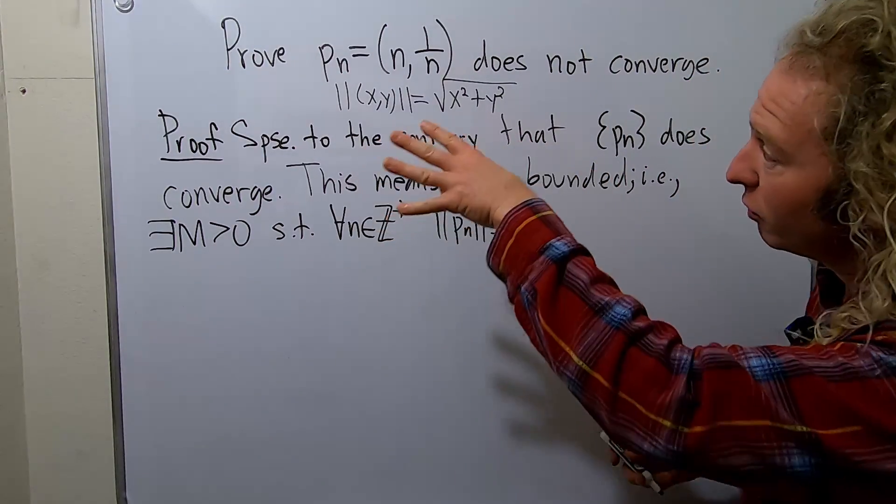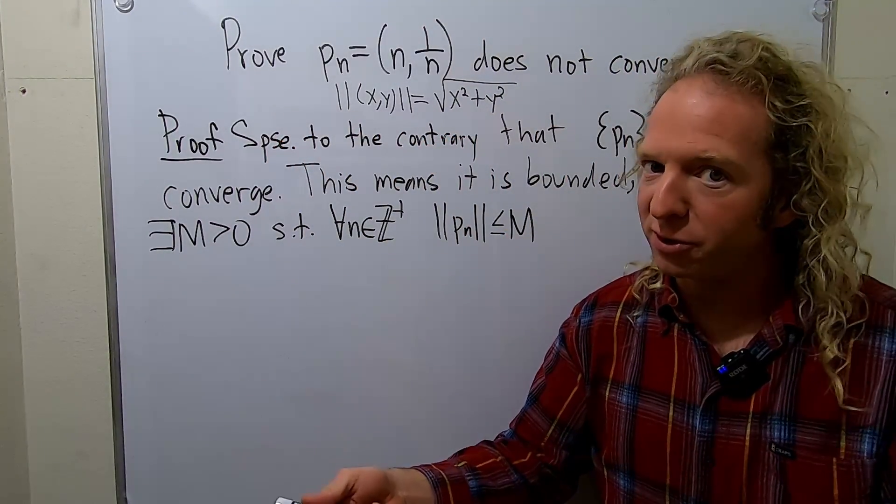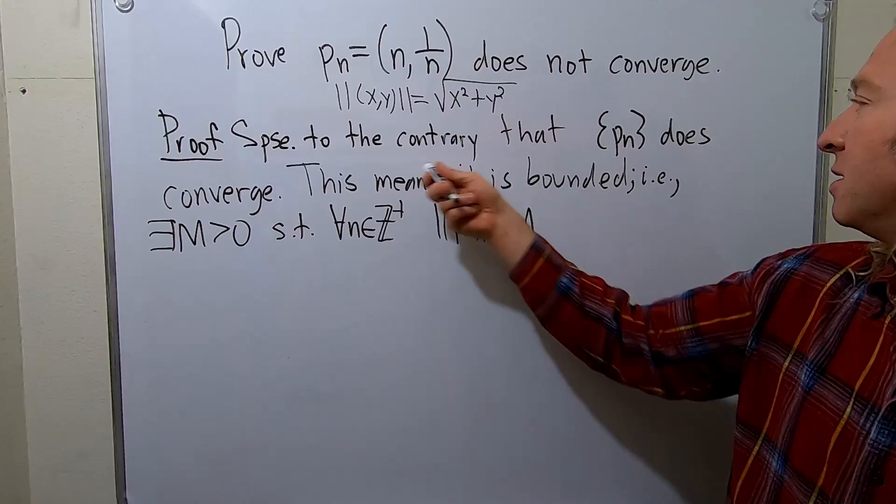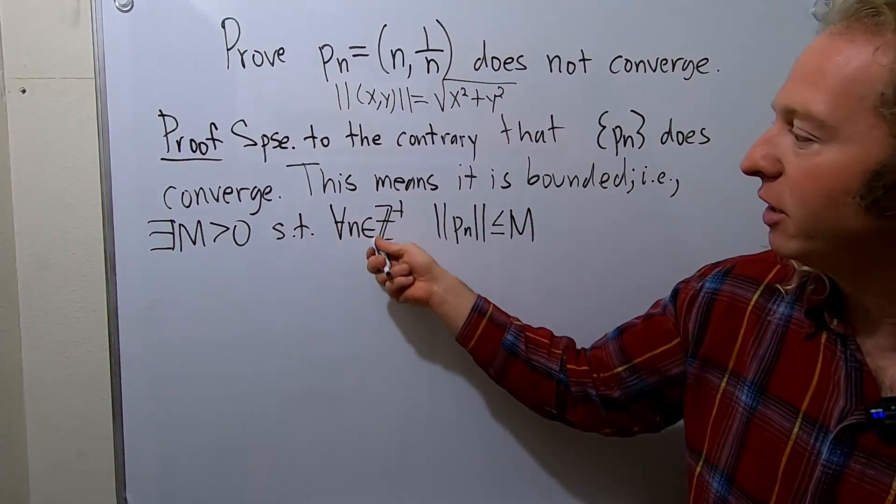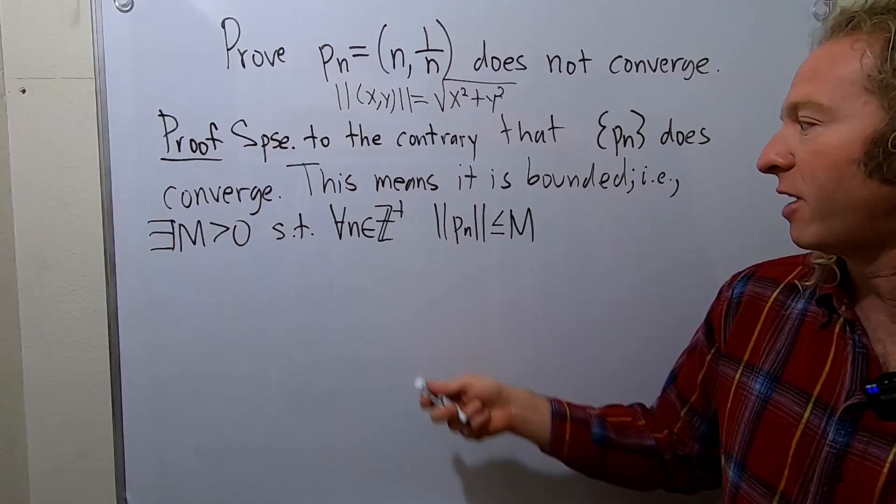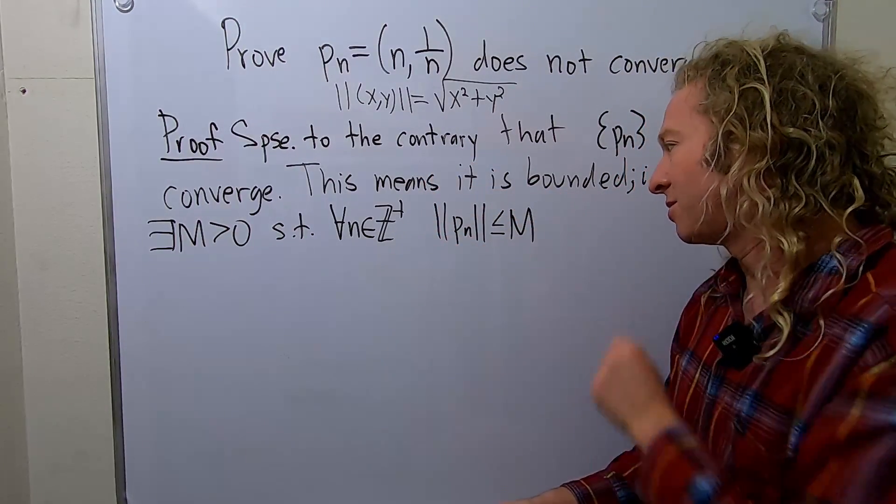Anyways, I started the proof by assuming that it does converge. So when a sequence converges, it's bounded. So this means it is bounded. In other words, there is a positive integer m such that for every natural number n for which the sequence is defined, the magnitude or the norm of that sequence is less than or equal to m.